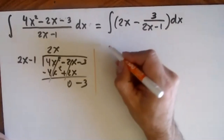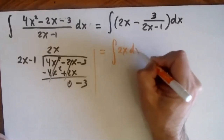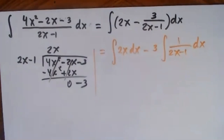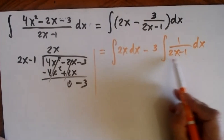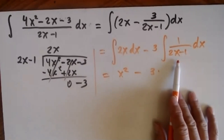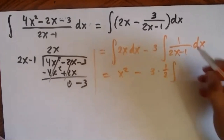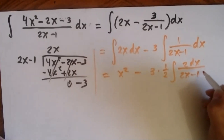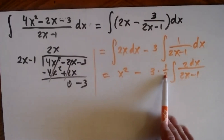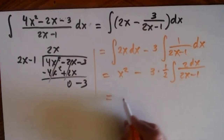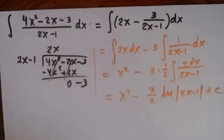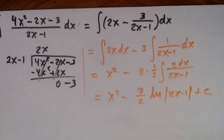This splits into two integrals: integral of 2x dx minus 3 times integral of 1 over 2x minus 1 dx. The first integral is x squared. For the second, using u equals 2x minus 1, du equals 2 dx, so we need one half outside: one half times integral of 2 dx over 2x minus 1. The result is x squared minus 3 halves times ln of the absolute value of 2x minus 1 plus C.